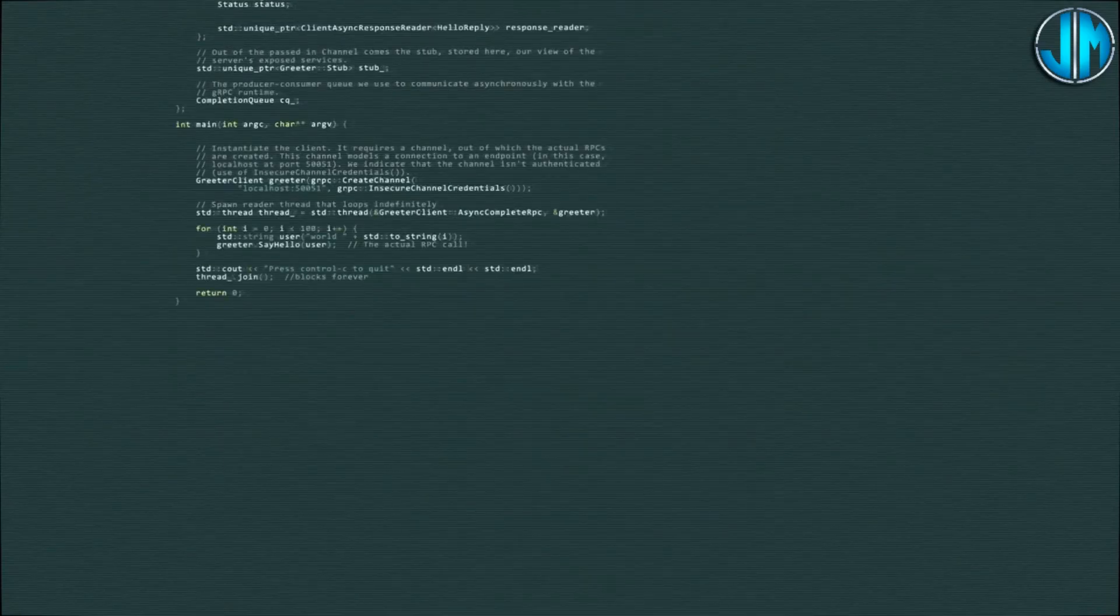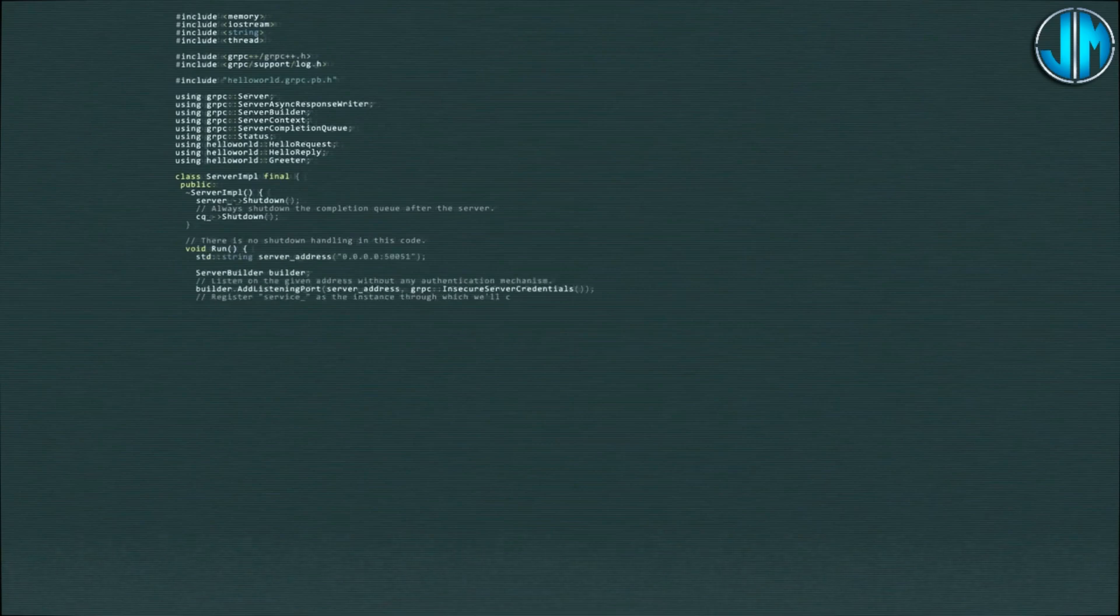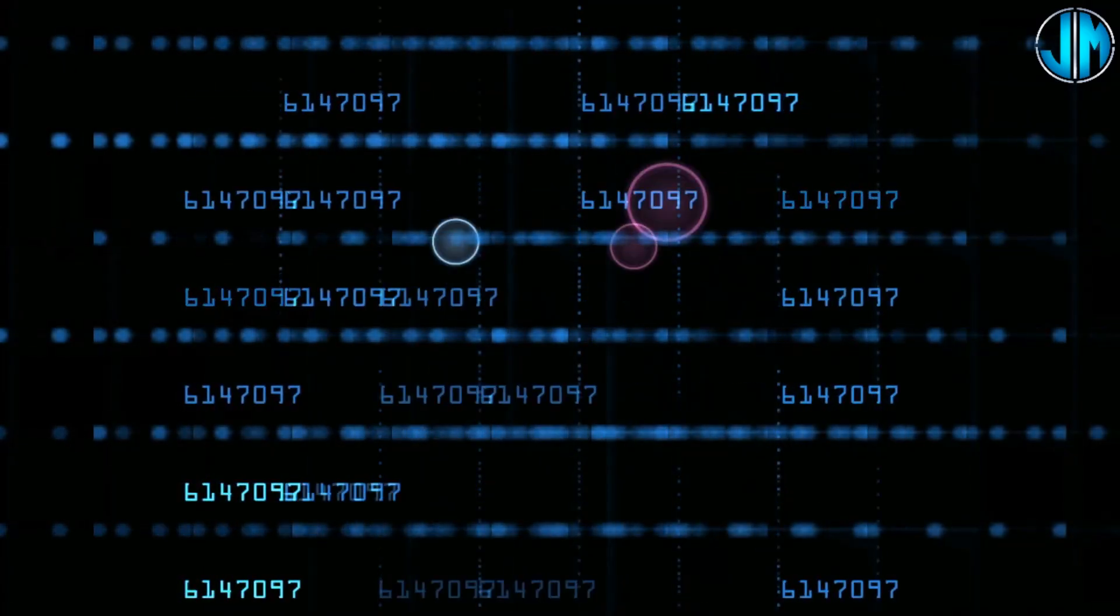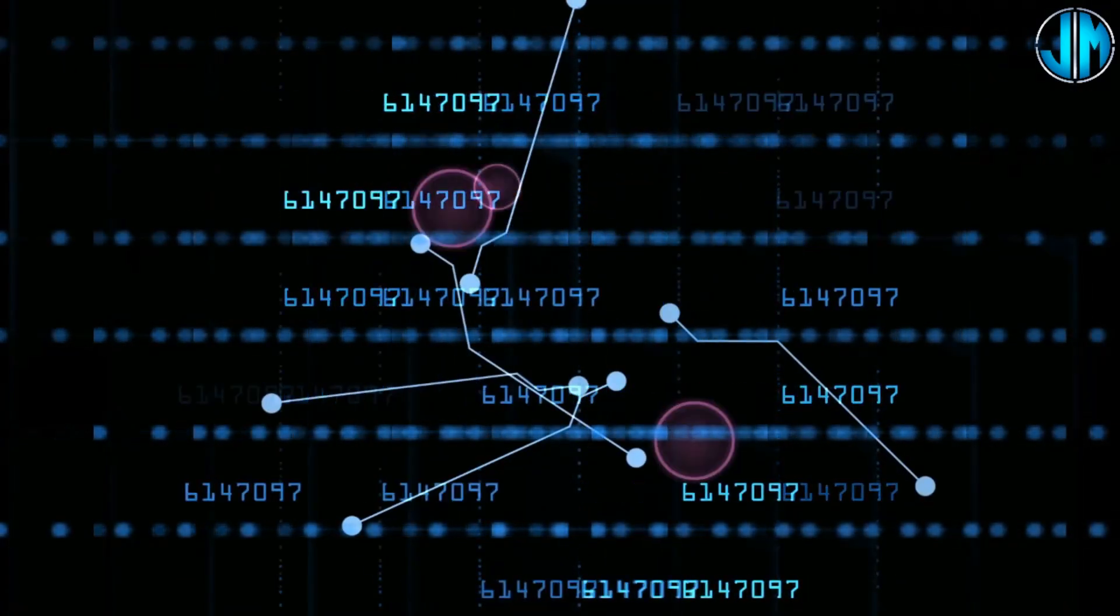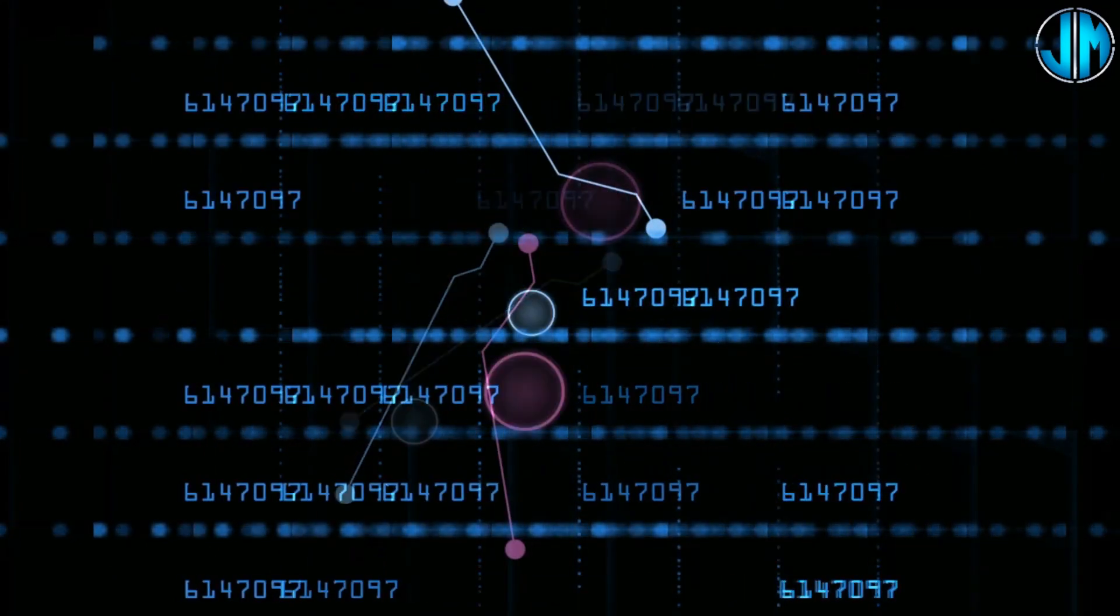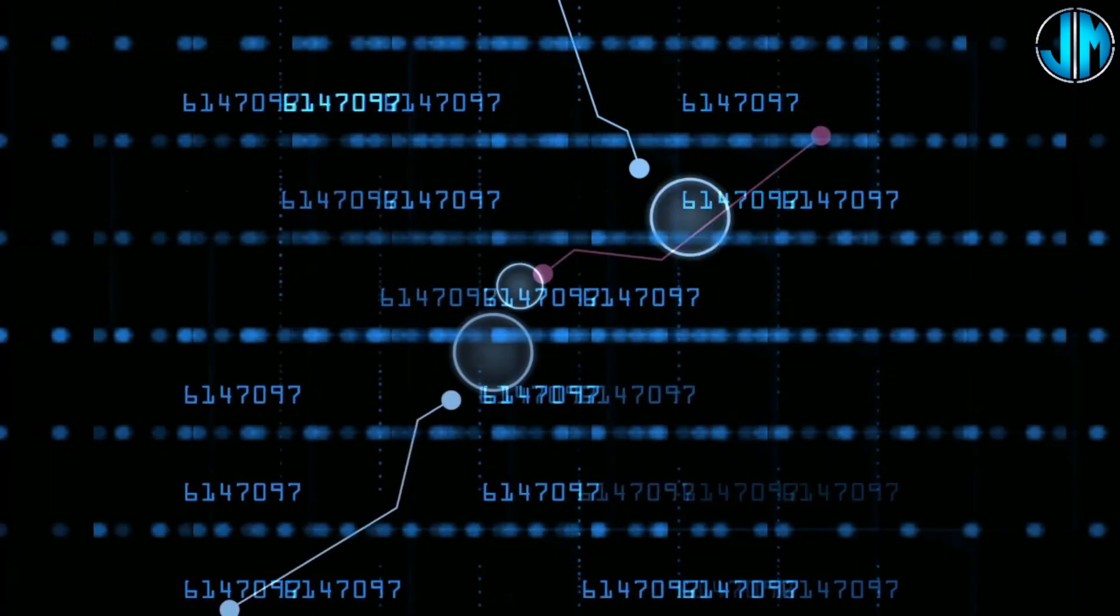Unlike narrow AI, which excels at specific tasks, general AI aims to replicate the breadth and depth of human intelligence across a wide range of activities. Imagine a machine that can not only understand and interpret language, but can also learn new languages, play chess at a grandmaster level, compose music, and engage in meaningful conversations. That's the promise of general AI.